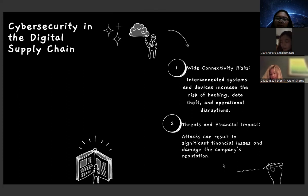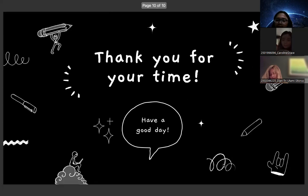Cybersecurity in the digital supply chain. The first concern is wide connectivity risk — interconnected systems and devices increase the risk of hacking, data theft, and operational disruptions. The second concern is threats and financial impact: attacks can result in significant financial losses and damage the company's reputation. Thank you for your time.